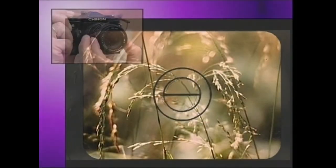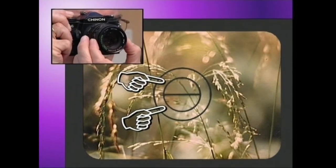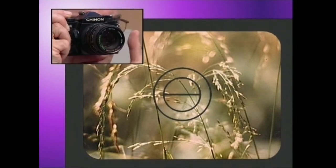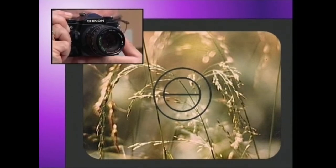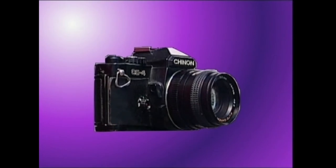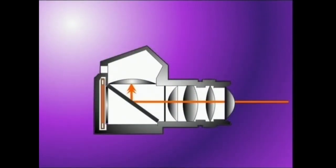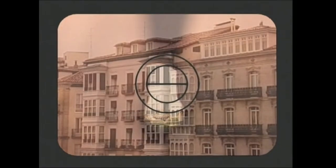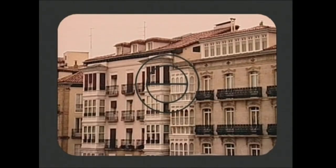Reflexaren mekanika bi prismaz osatua dago. Prisma hauek irudia zatitua erakusten dute fokatu gabe dagoenean. Fokatzeko ustaia igituz, zatiek bat egitea lortuko dugu, hau da, irudia fokatzea. Reflex bizorea duten argazki kameretan, objektiboaren eta fokatzeko pantailaren arteko tartea eta objektiboaren eta pelikularen artekoa bat bera dira. Beraz, pantailan fokaturik ikusten duguna, fokaturik egongo da argazkian. Gainera, Reflex kameretan paralaxia deitu akatsa erabat iditen da.